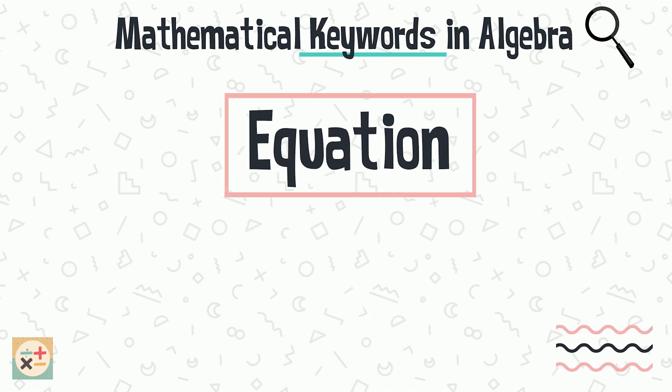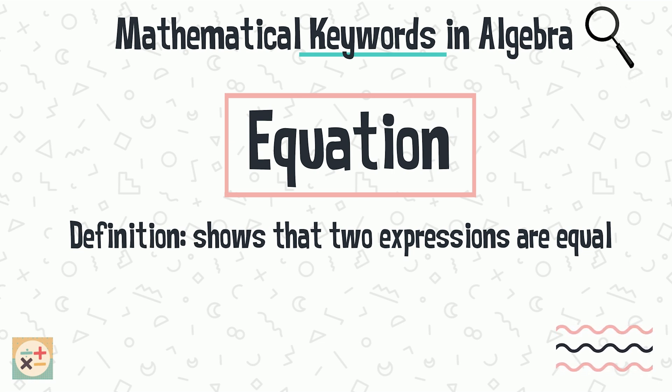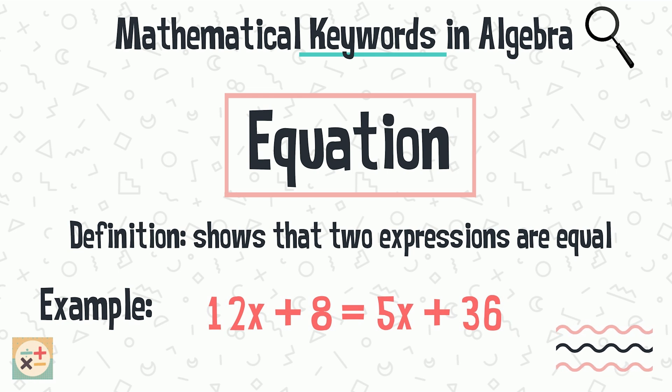An equation is made up of two expressions, linked together by an equals sign. The equation shows that two expressions are equal.